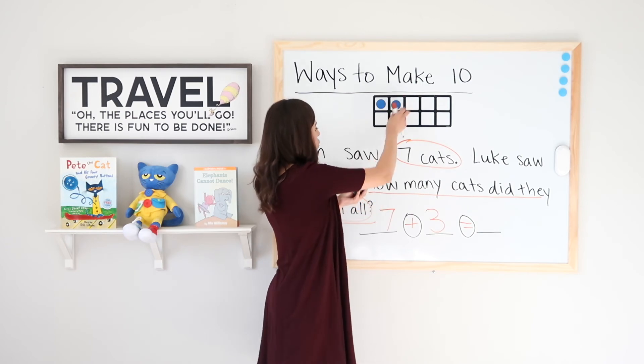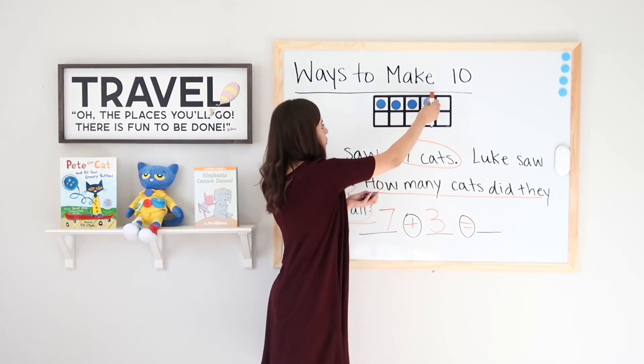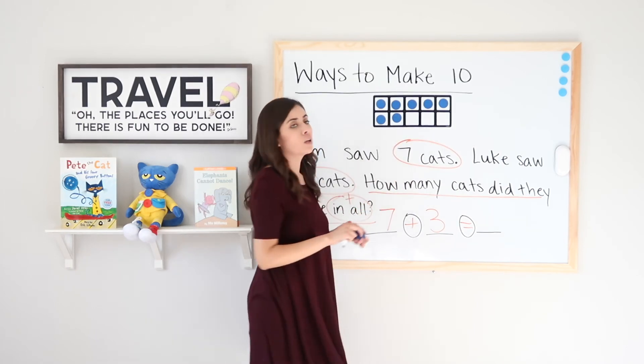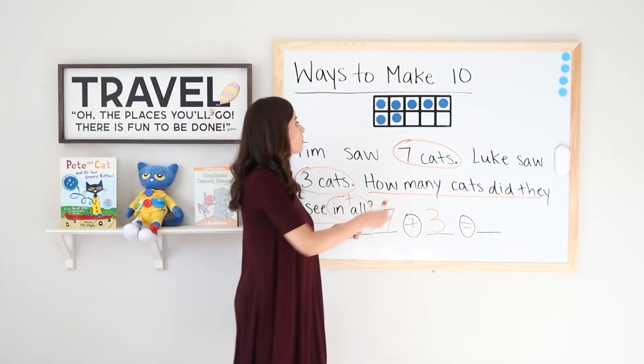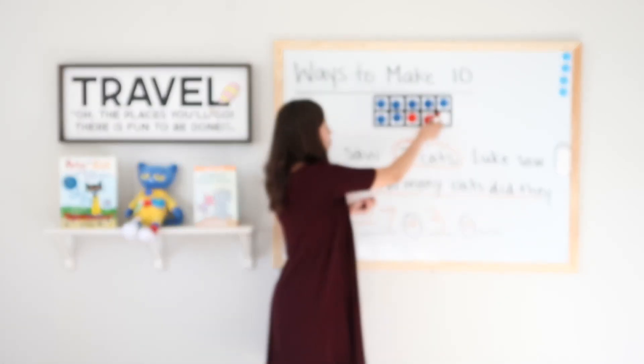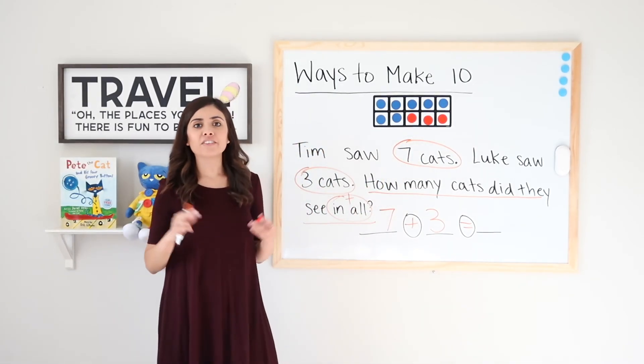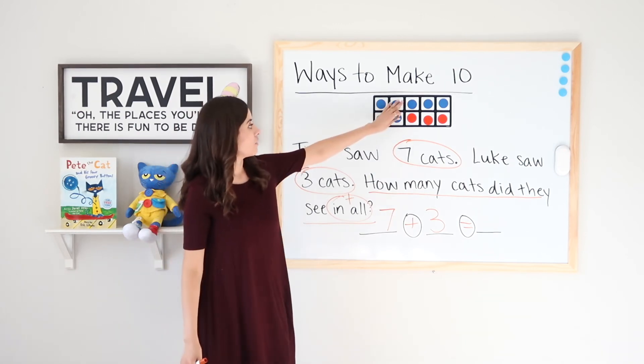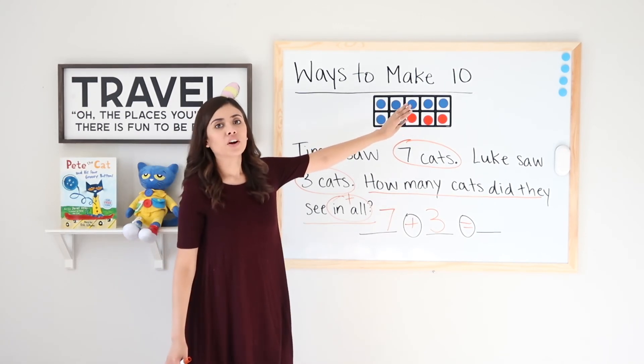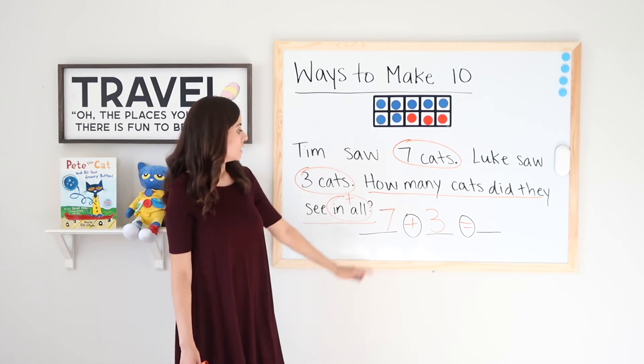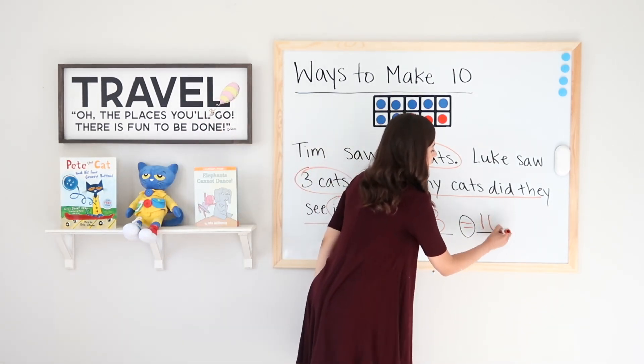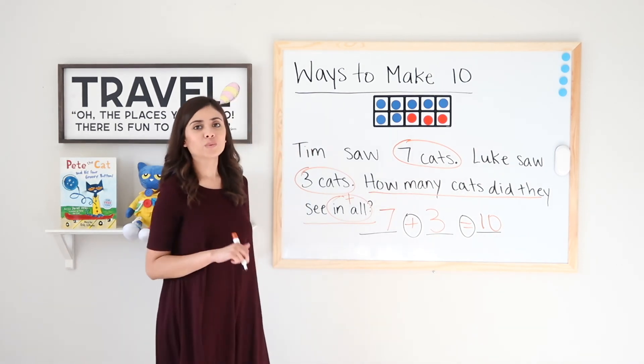So seven blue dots. One, two, three, four, five, six, seven. Plus three more. One, two, three. Again, I filled up my ten frame. I don't have to count these because I filled it up and I know that there are ten. Very good. Seven plus three equals ten. Nice work.